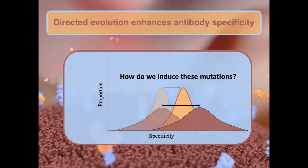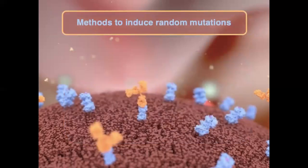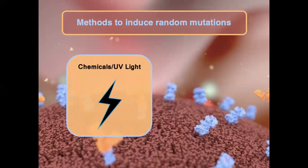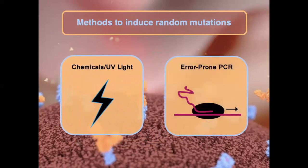How do we actually induce these mutations in the cell? There are many methods, and I'll focus on three main ones. The first is using chemical or UV light-induced mutagenesis — high-energy light damages your DNA and introduces random mutations. The second is error-prone PCR: if you amplify a genetic sequence via PCR while causing the polymerase to be very inaccurate, you get many strands with naturally occurring mutations throughout them, inducing random mutagenesis.